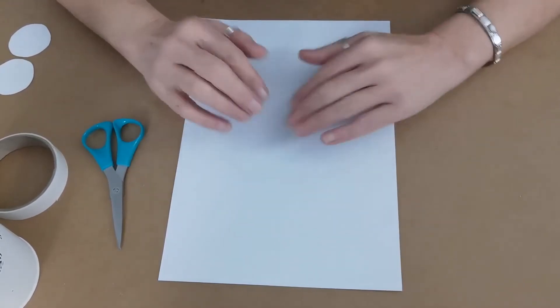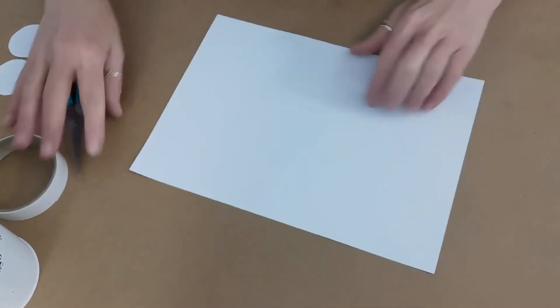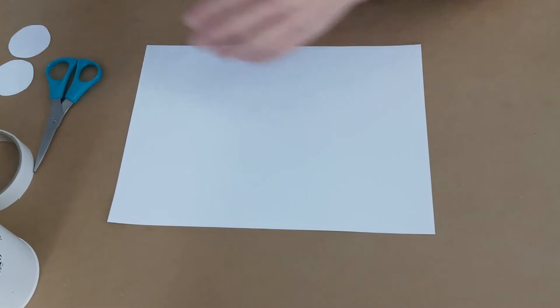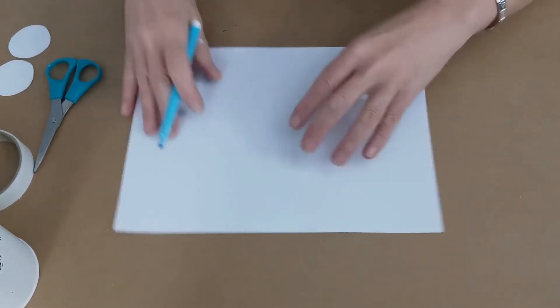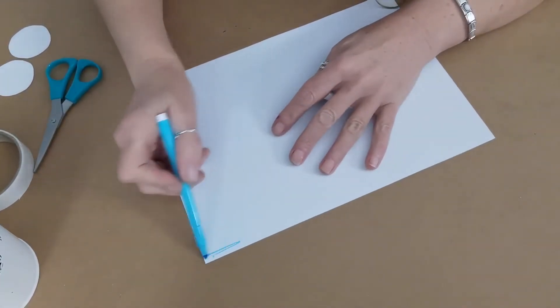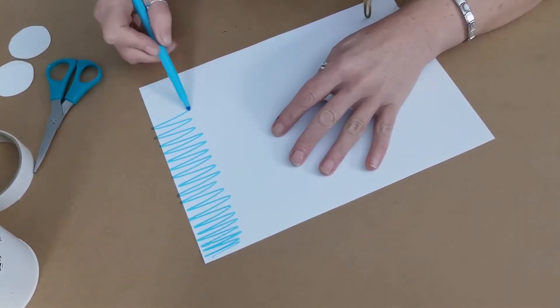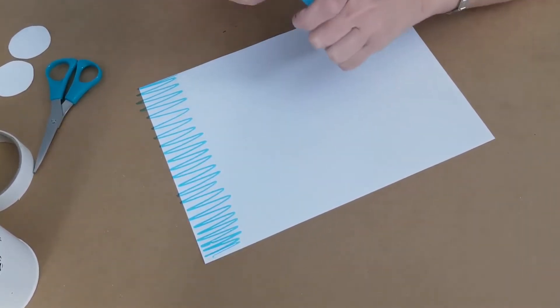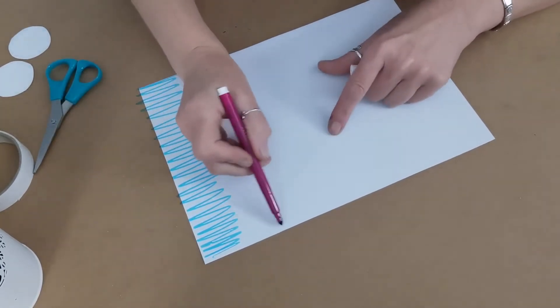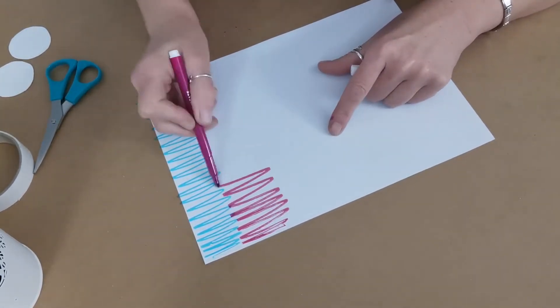So the first thing we're going to do is decorate this piece of paper. I'm going to use some colored pens. I'm going to start with some blue and do some wavy lines, so some blue here and then I'm going to change my color and use some of this nice deep pink.